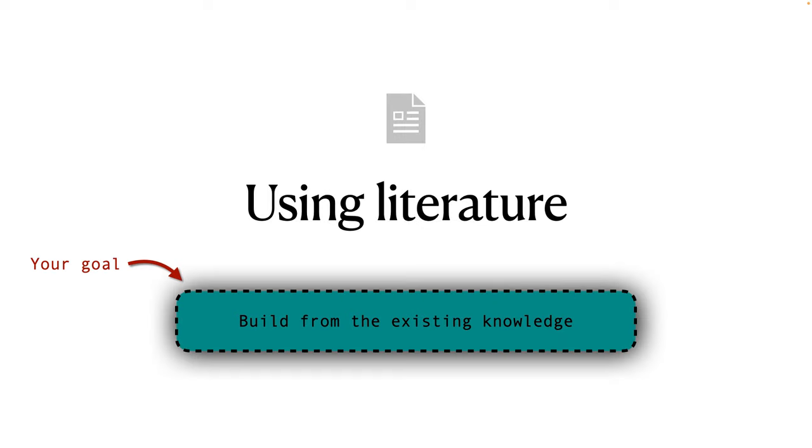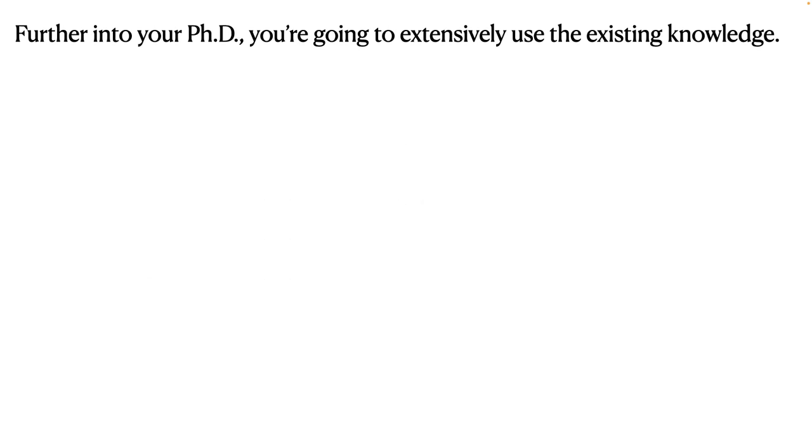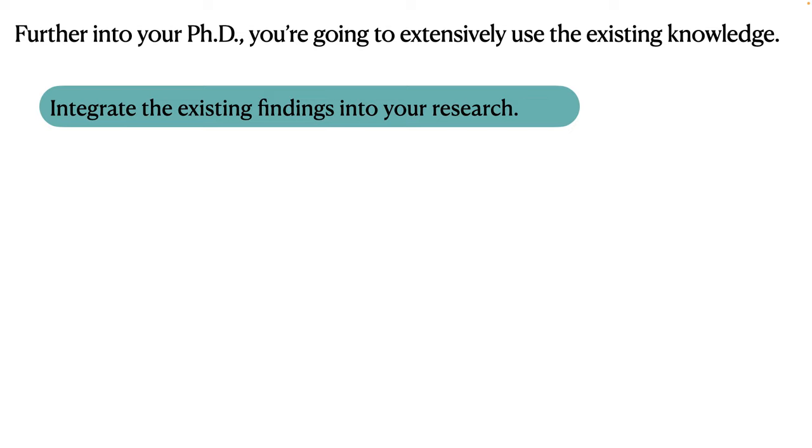So the third and the final subtask is using the literature. So this comes after you've filtered out the relevant papers and you've absorbed their content. And your main goal here is to build something new from the existing knowledge. Now, the further you are in your PhD, the more avid user of the existing literature you become. And at this point, you want to really integrate the existing findings into your own work. And here you are really building new knowledge in connection to what has been done before.